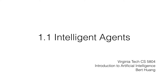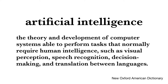This is the first video lecture for CS5804 Introduction to Artificial Intelligence. In this video, we'll be talking about how to organize our thoughts on what makes artificially intelligent programs more or less intelligent. The New Oxford American Dictionary says that AI is the theory and development of computer systems able to perform tasks that normally require human intelligence, such as visual perception, speech recognition, decision-making, and translation between languages.